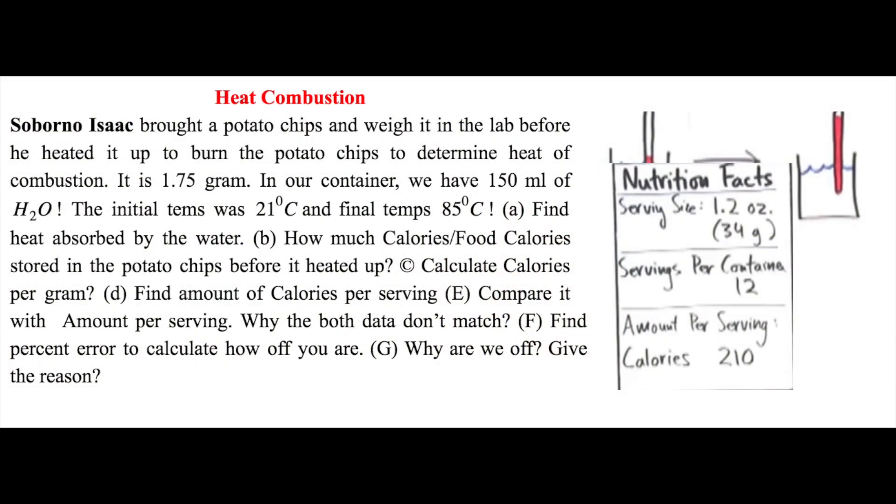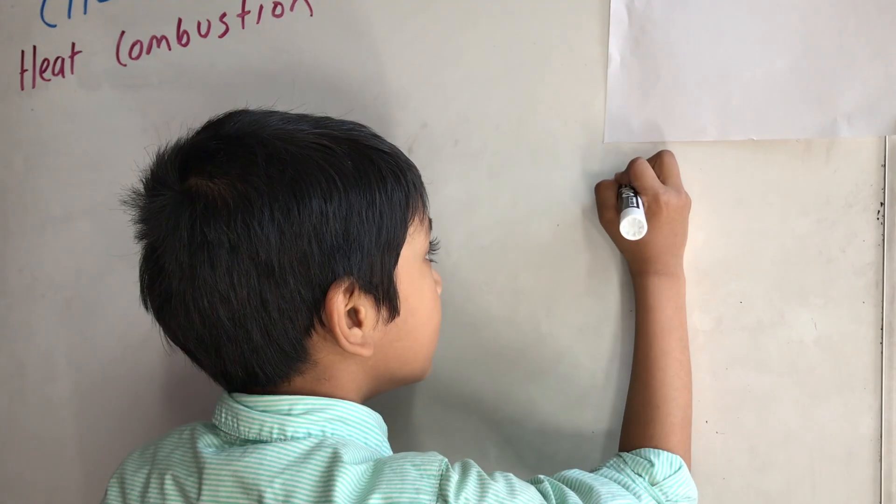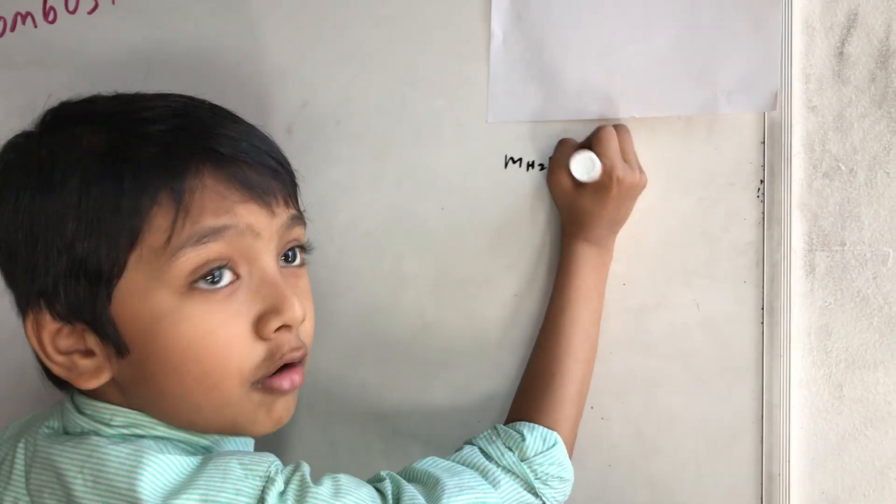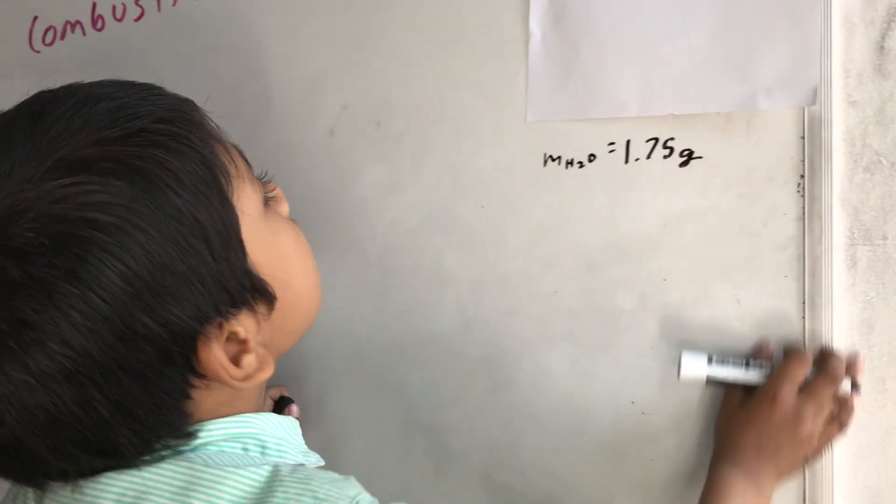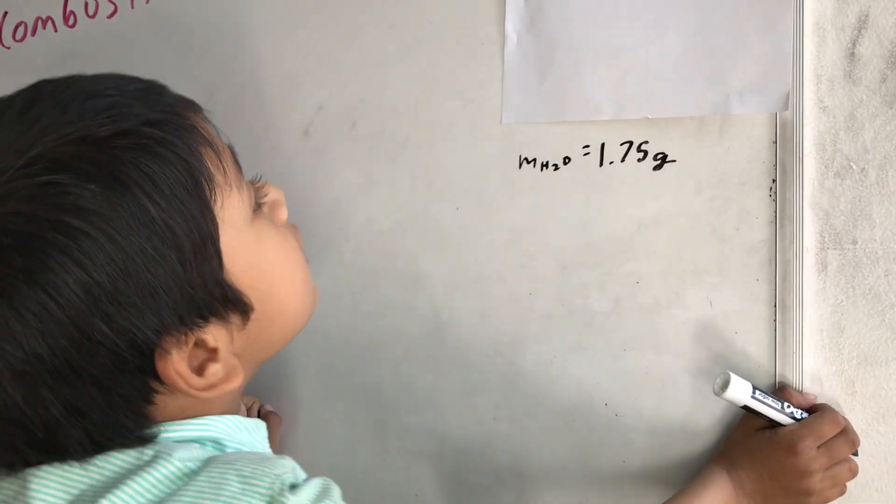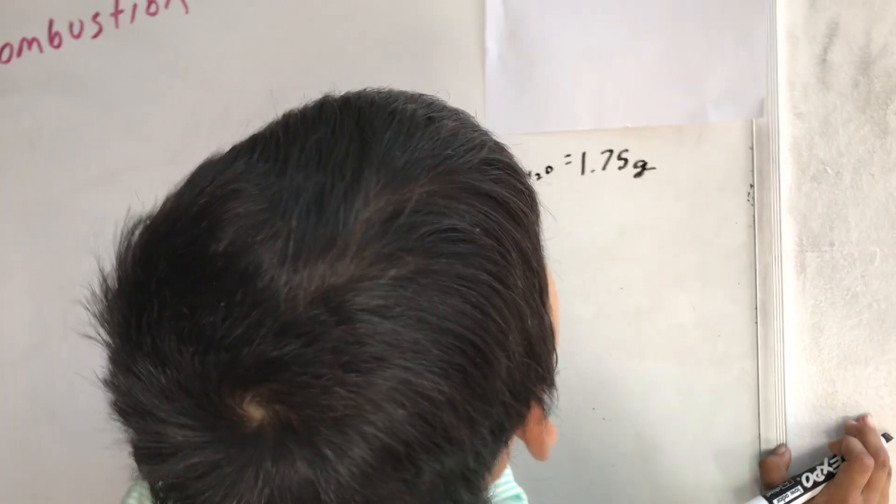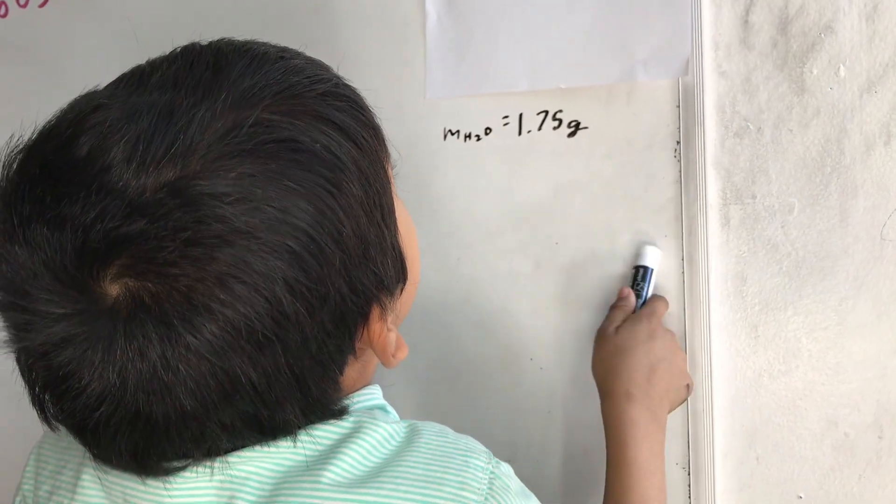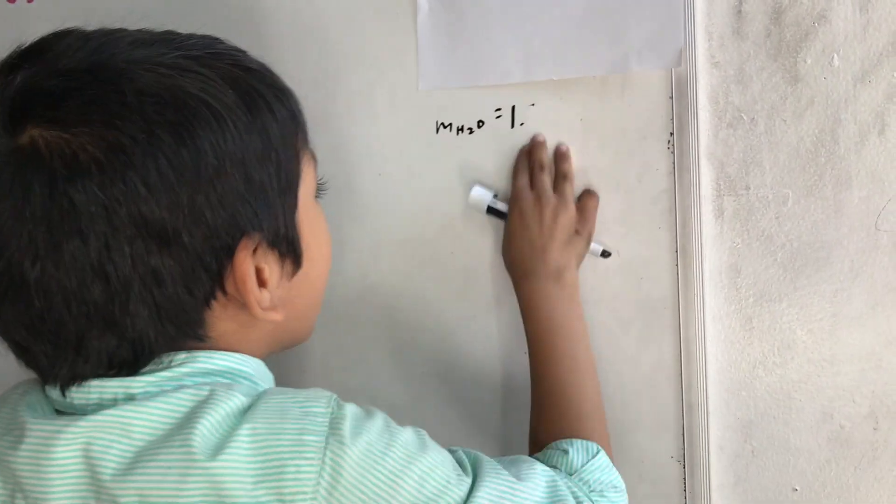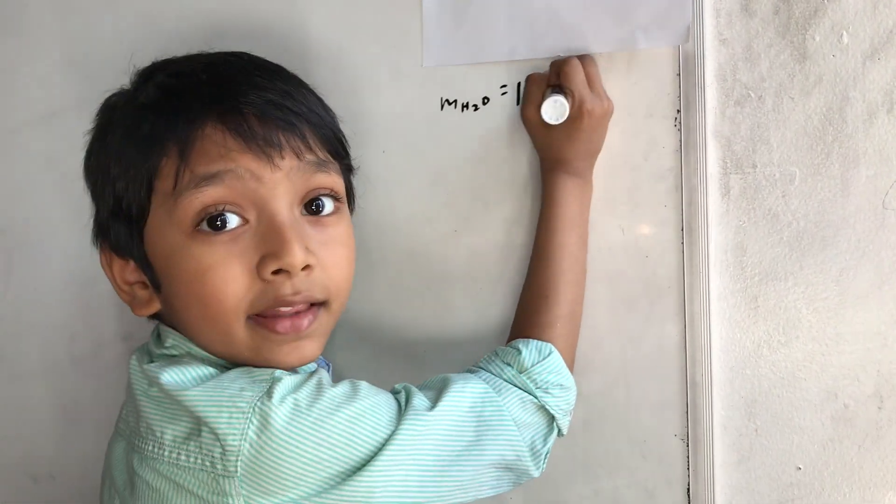So anyways, it is 1.75 grams. We'll need that for later. In our container, we have 150 milliliters of H2O. So we're going to need that. Mass of H2O is 1.75 grams. Wait, this is wrong. This is actually 150 milliliters. Sorry.